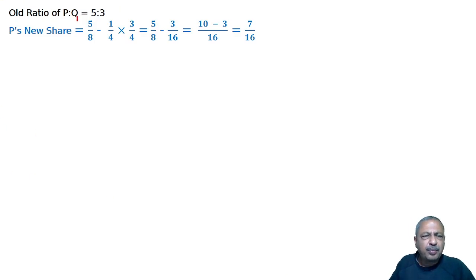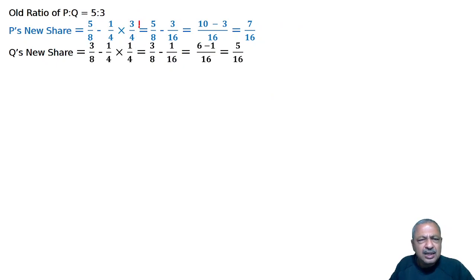P's new share: 5 by 8 minus one-fourth times 75 percent. 75 by 100 is 3 by 4, which comes to 7 by 16. For Q: one-fourth times 25 percent, which is 25 by 100, so 1 by 4.